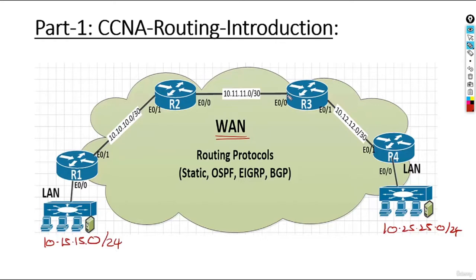To make routers talk to each other, the language of a router is called routing protocols. In CCNA, you are going to heavily study static routing, OSPF routing, and EIGRP routing. BGP will come in CCNP high-level studies because BGP is the routing protocol of the internet. OSPF stands for Open Shortest Path First, EIGRP stands for Enhanced Interior Gateway Routing Protocol, and BGP stands for Border Gateway Protocol.